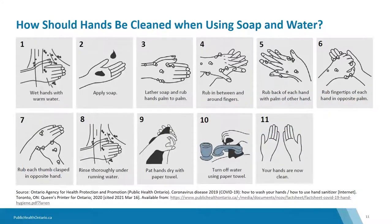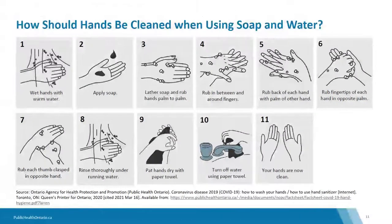This slide provides a visual step-by-step of how to clean your hands using soap and water. First, wet hands with warm water. Apply soap. Lather soap and rub hands palm to palm. Rub in between and around fingers. Rub back of each hand with the palm of the other hand. Rub fingers of each hand in opposite palm. Rub each thumb clasped in opposite hand. Rinse thoroughly under running water. Pat hands dry with a paper towel and turn off the water using the paper towel. Your hands are now clean. Ensure you scrub your hands for at least 15 seconds — about the time it takes to hum the Happy Birthday song from beginning to end, two times. Pay attention to all surfaces of the hands and fingers, including the tops of hands. Paper towels are preferred for drying hands.